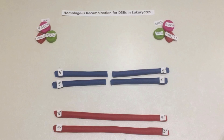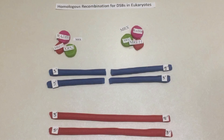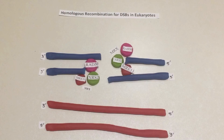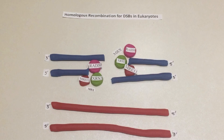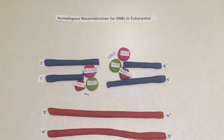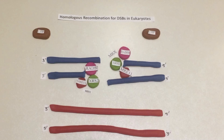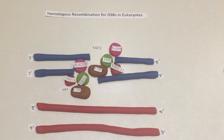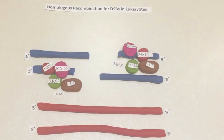Resection happens by the MRX complex, which is made of the three proteins MRE11, RAD50, and XRS2. This complex initiates homologous recombination with the help of CTIP. CTIP initiates the nucleolytic processing of the five prime end.